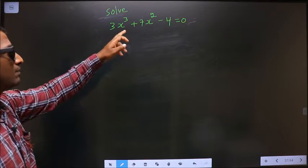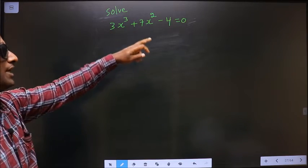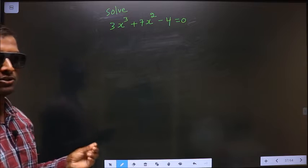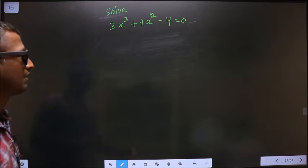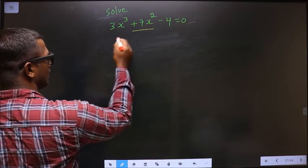Solve 3x³ + 7x² - 4 = 0. To solve this equation, I have to change the 7x² term.